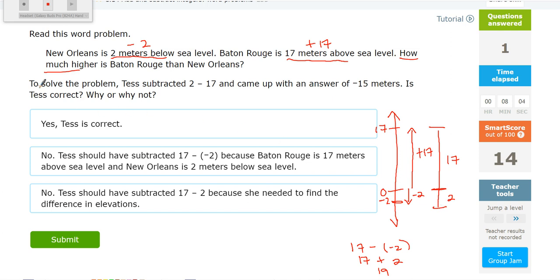So to solve this problem, Tess subtracted 2 minus 17 and came up with negative 15. Well, that's not true. Tess should have subtracted 17 minus negative 2, because Baton Rouge is 17 meters above sea level and New Orleans is 2 meters below sea level. Because anytime you're trying to find the difference between two quantities, the difference between two points, you're going to subtract them.